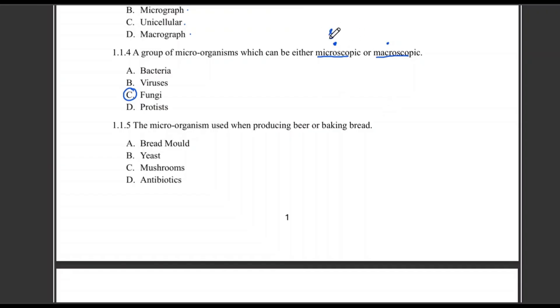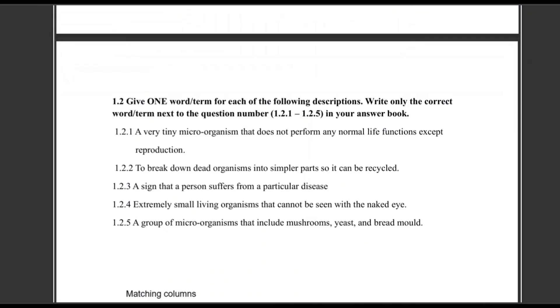Then 1.1.5: The microorganism used when producing beer or baking bread. Easy peasy stuff. Which one will it be, guys? Easy peasy. That will be yeast. Not bread mold, not mushroom, and not antibiotics. Please kindly let me know in the comment section how many you are getting correct. Remember, whenever we answer a worksheet or topic test or an exam, you also need to take out a paper and answer on your side. Then you let me know in the comment section how many you are getting correct. This is obviously for learning purposes.